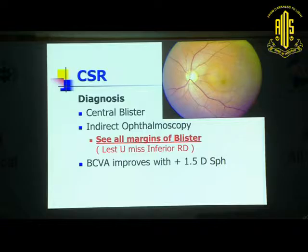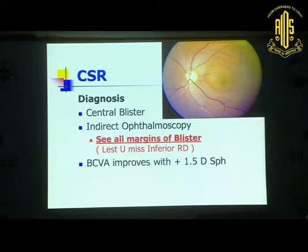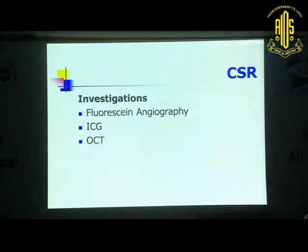Normally patients say they can see blurred, but if you put a plus 1.5 lens, vision improves. By and large, you are then clear that you are dealing with central serous retinopathy.